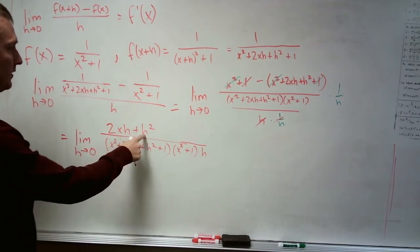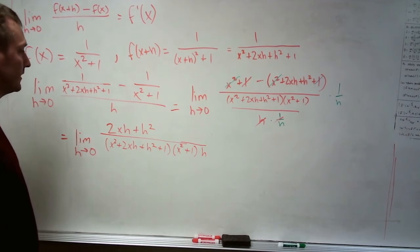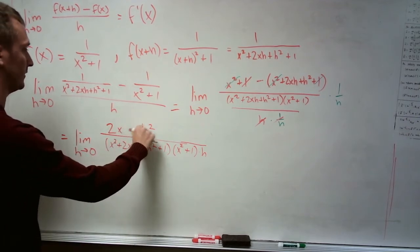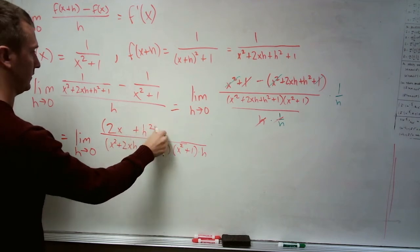times x squared plus 1 times h. We notice up top that both these terms have an h in them, a factor of h, so we're going to factor that out. And I'll just do that on the fly.